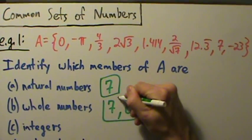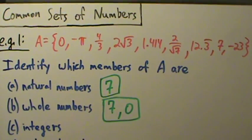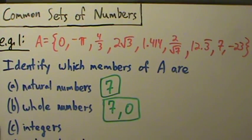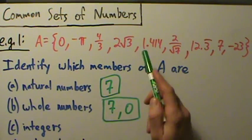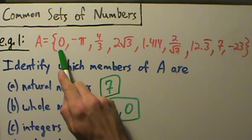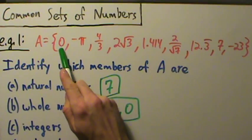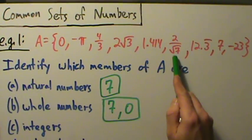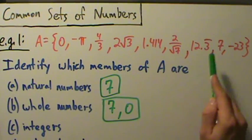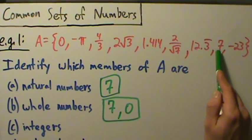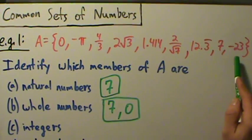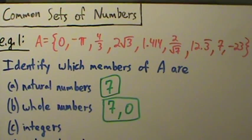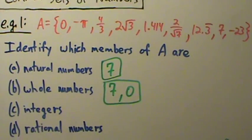If you want to go through the whole list again, of course you can. Since we already have seven as the only natural number, then seven is the only whole number besides zero. Whole numbers have to be positive, so negative 23 does not count. So the answer for whole numbers is zero and seven.